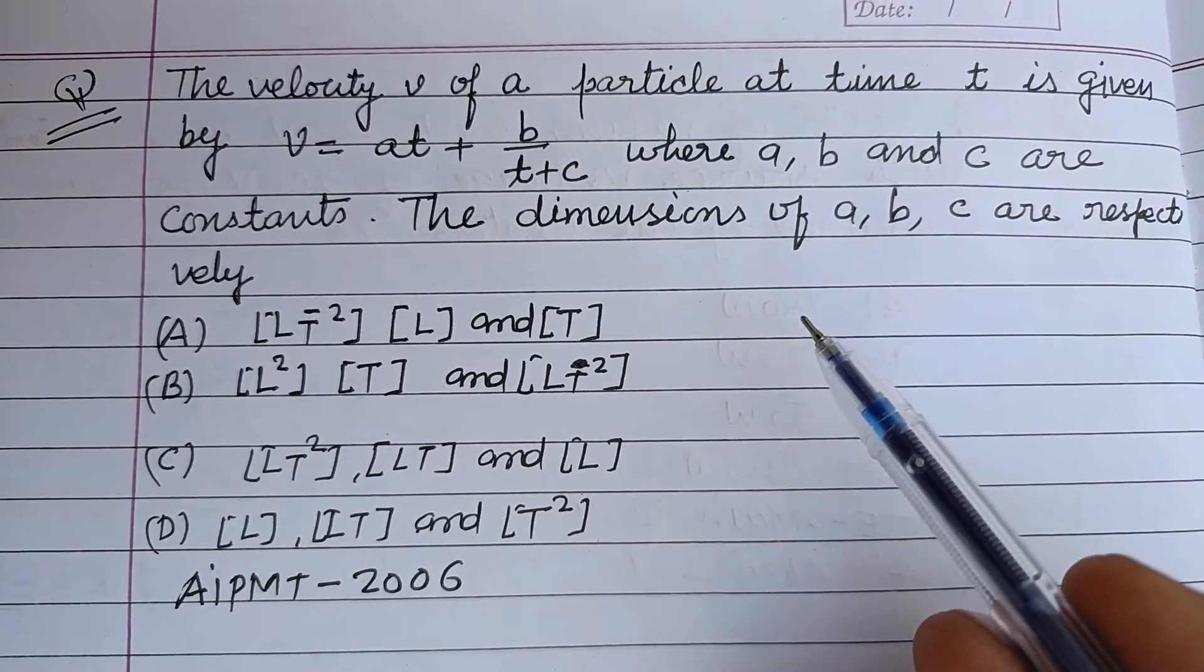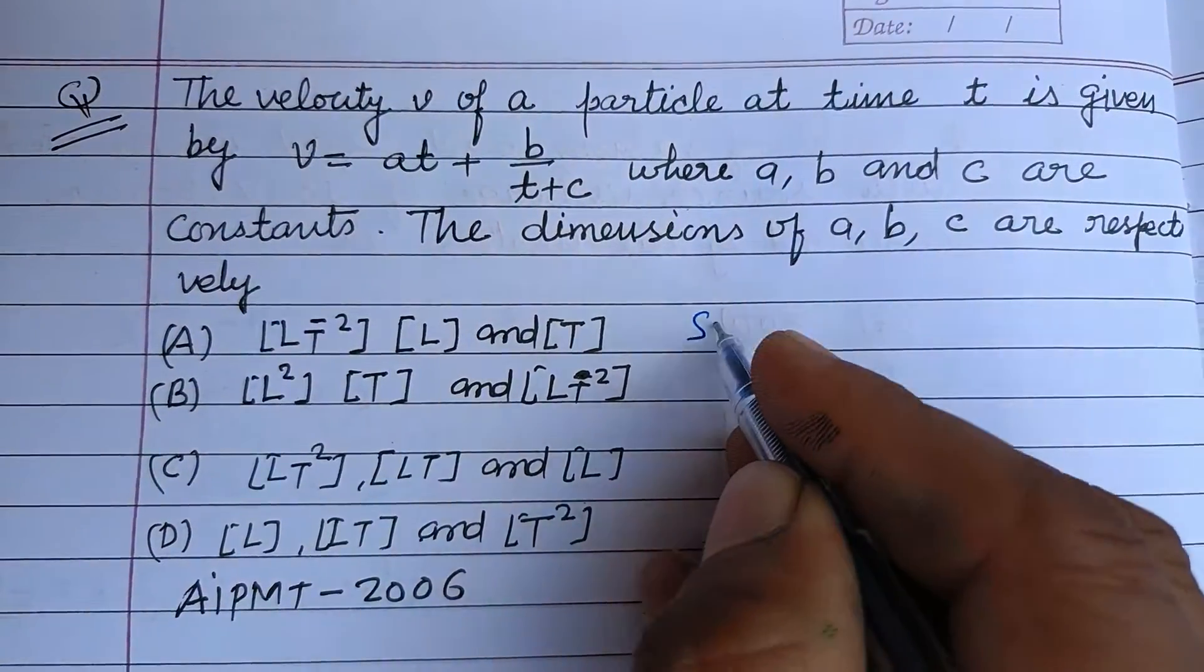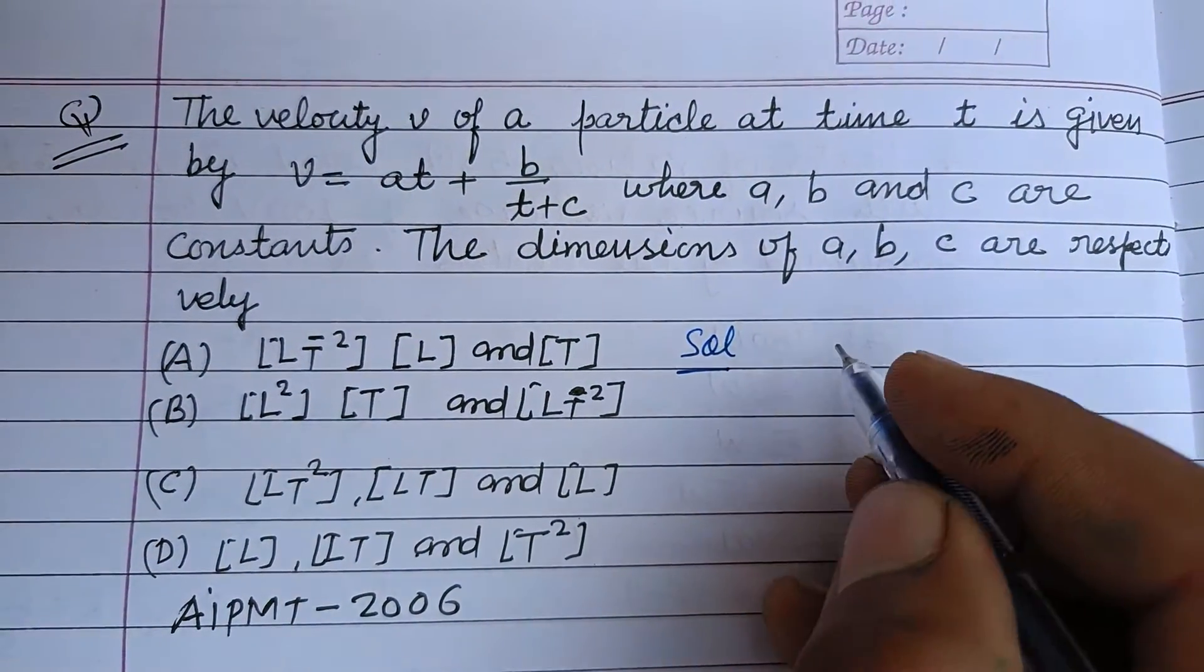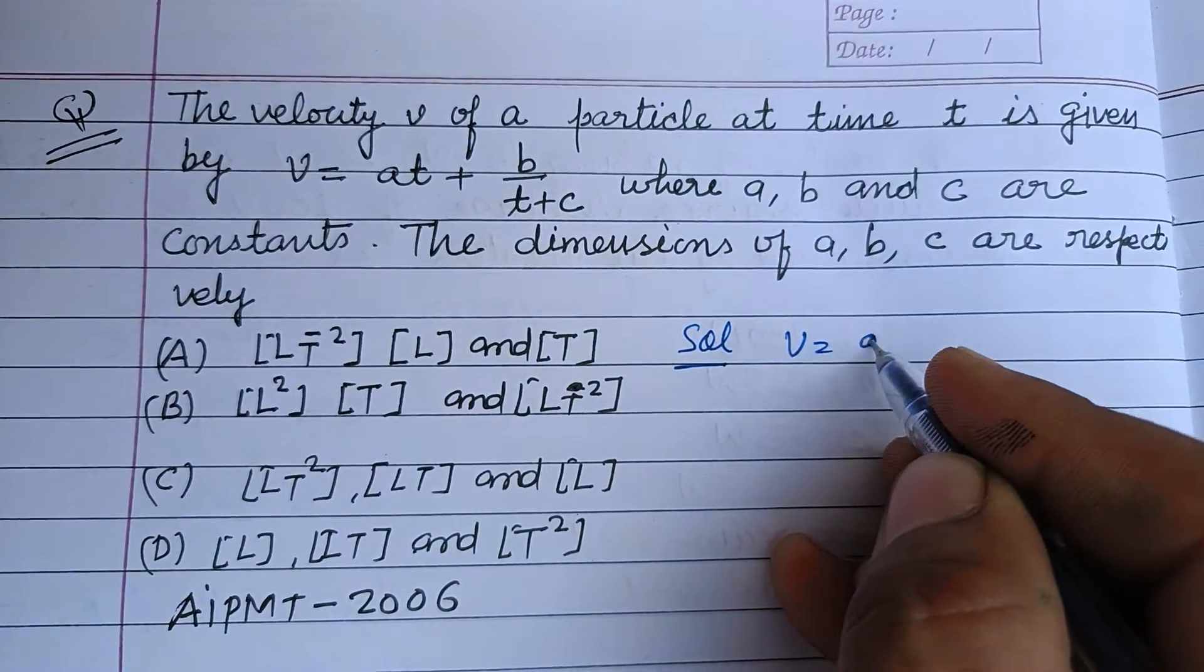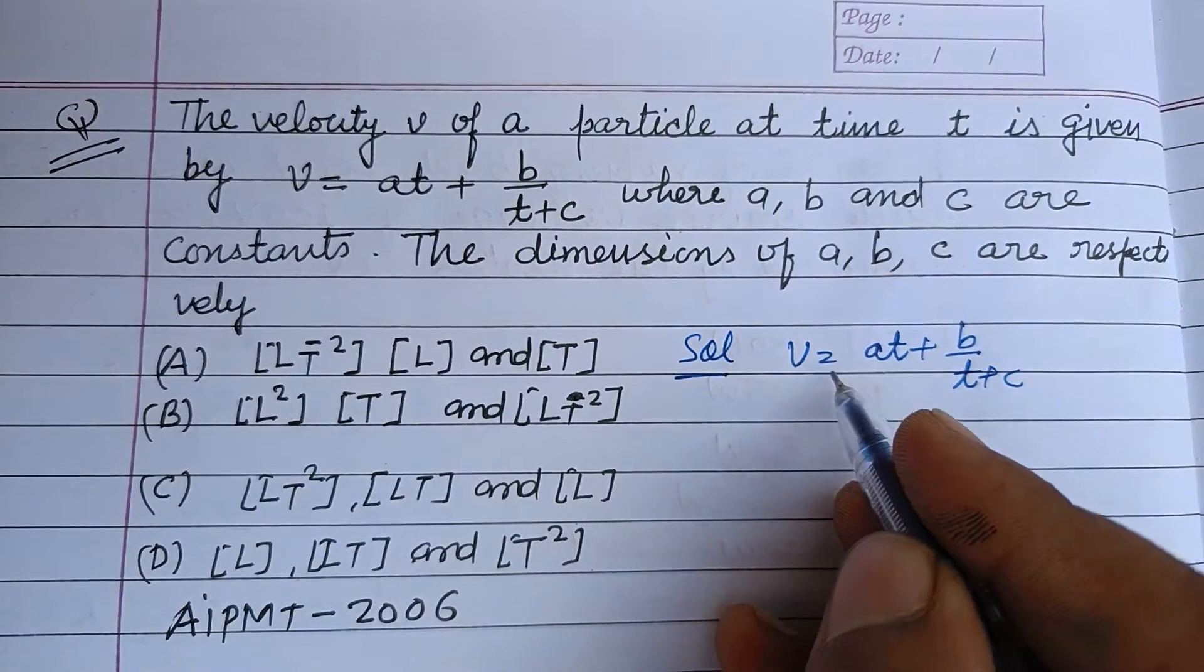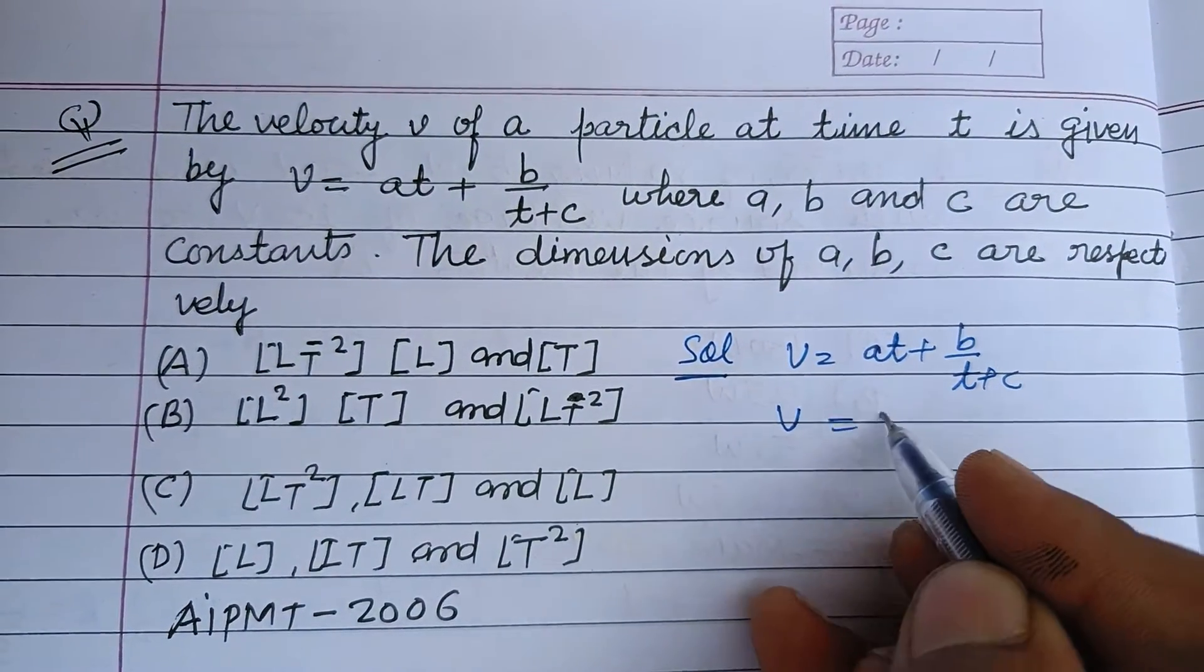The dimensions of a, b, c are respectively... You know that same quantities are added and subtracted. So v is given to us as at + b/(t+c). This is velocity, this is also velocity, and this is also velocity.